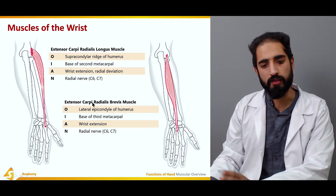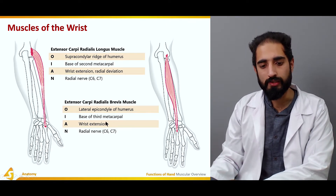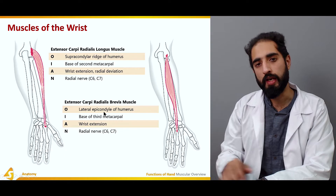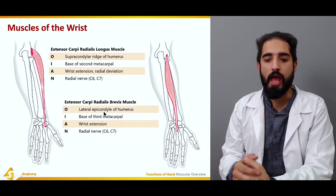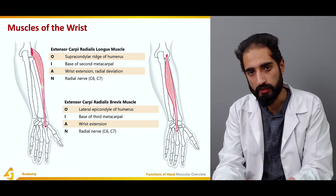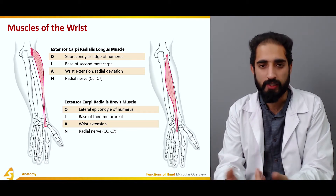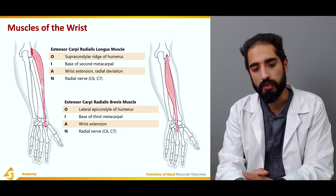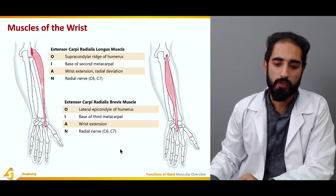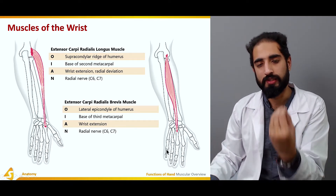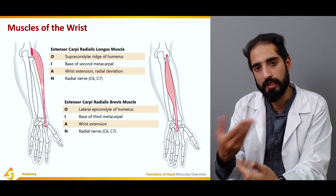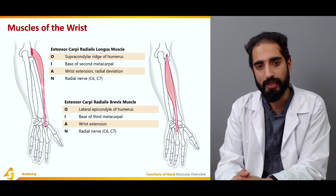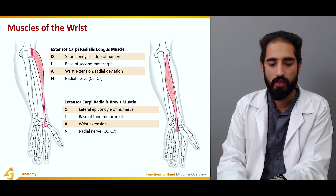The extensor carpi radialis brevis also originates at the lateral epicondyle of the humerus. All extensors share this common proximal attachment, and when it becomes inflamed, the condition is known as tennis elbow or lateral epicondylitis. The brevis inserts at the base of the third metacarpal — the middle finger — which is centrally located, so despite having 'radialis' in its name, it is not involved in radial deviation and acts only as a wrist extensor. Its nerve supply is the radial nerve.